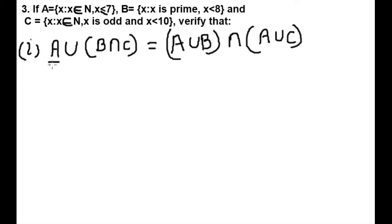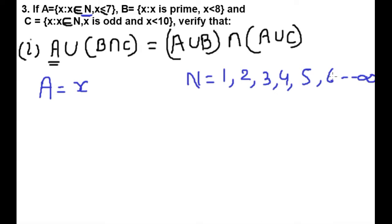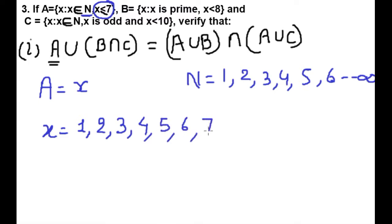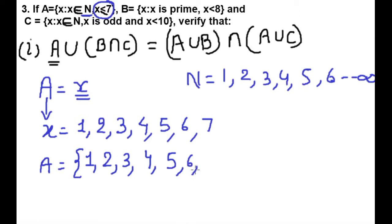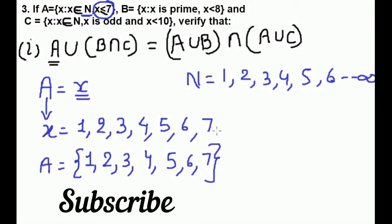First we will find Set A. As per the question, A is the set of x where x is a natural number. Natural numbers start from 1 — 1, 2, 3, 4, 5, 6, up to infinity. Here x is less than or equal to 7, so x equals 1, 2, 3, 4, 5, 6, 7. Therefore A = {1, 2, 3, 4, 5, 6, 7}.